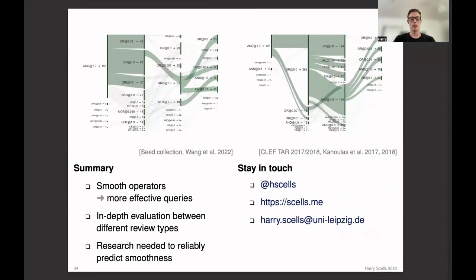So to summarize the talk, we found that these smooth operators are able to achieve more effective queries without changing any of the syntactic or semantic aspects of the queries. And although I didn't have time to share it in this presentation, we also performed an extensive evaluation on how these smooth operators work in queries used to search different types of systematic reviews. We also found that there were large differences in how smooth operators should be applied to these different types of queries. And finally, for future work, we found that there's really a lot of research left to reliably predict the smoothness of operators in practice.